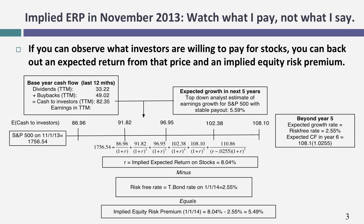I use those numbers to come up with expected cash flows for the next five years. These are the 500 largest market cap stocks in the U.S., so it's unlikely they can keep growing faster than the economy. At the end of the fifth year, I set the growth rate equal to the risk-free rate as a proxy for the economy's growth rate — that was 2.55%. So cash flows grow at 5.59% for five years, then 2.55% in perpetuity. I solve for the discount rate that makes the present value equal to the index level, and I get 8.04%.